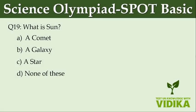What is the Sun? Option A: A comet. Option B: A galaxy. Option C: A star. Option D: None of these.